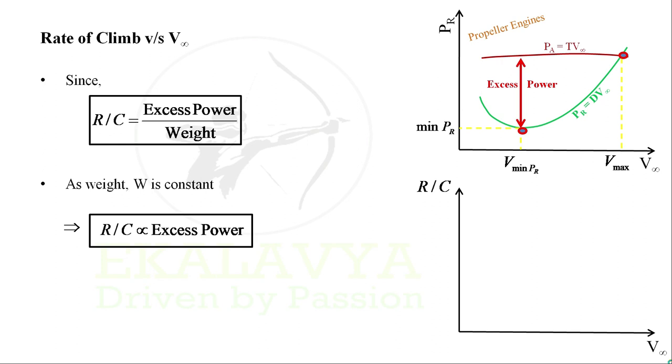Rate of climb reaches a maximum at minimum power required. Rate of climb then reduces with velocity and becomes zero at V max.